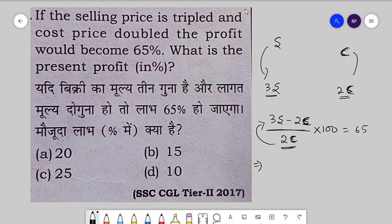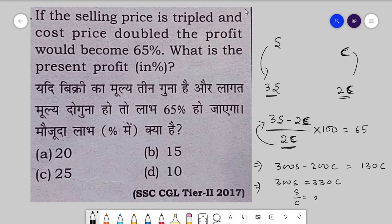So: 300S minus 200C is equal to 130C. That gives us 300S equals 330C, so S to C is equal to 300 divided by 330.